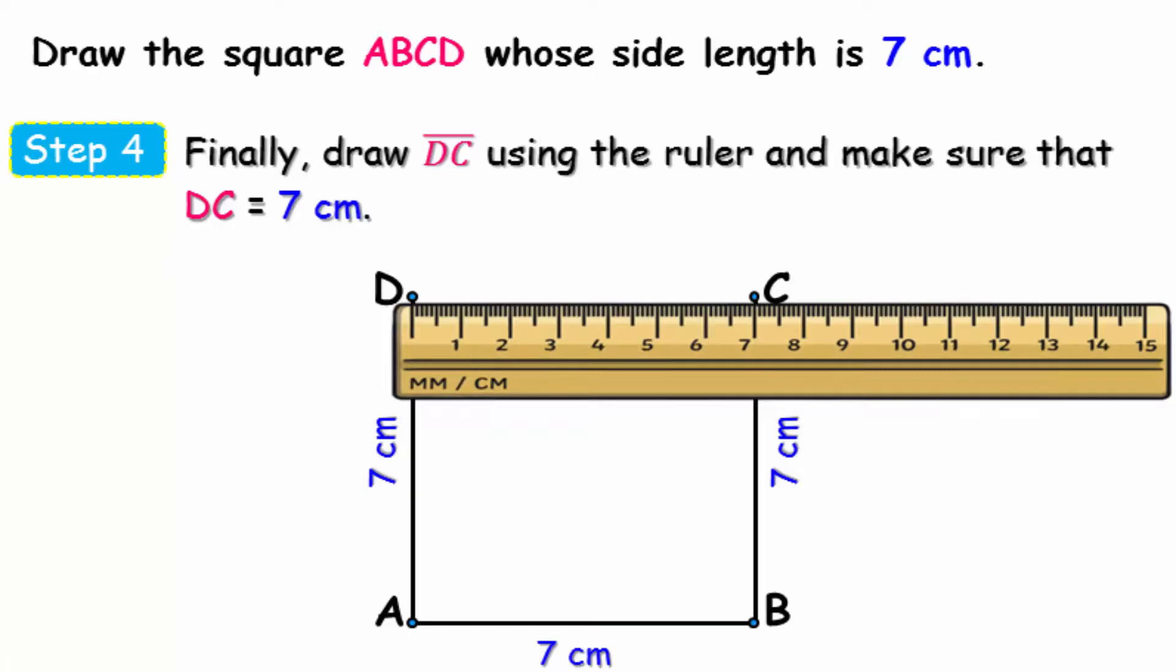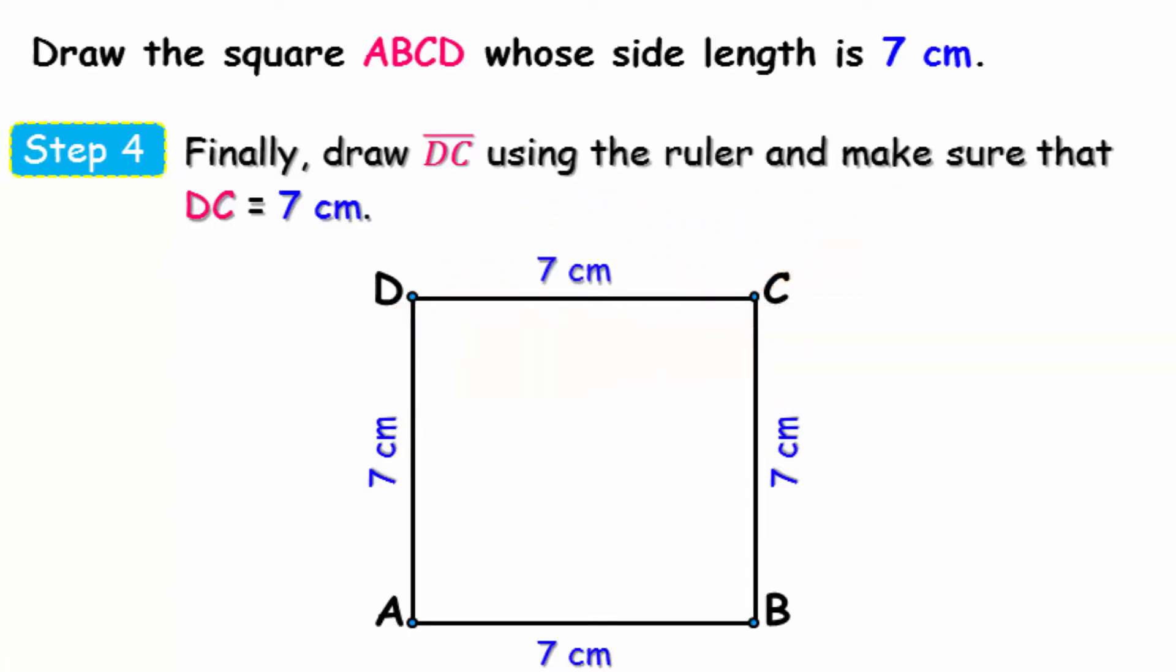the length of DC is 7 centimeters. So we get the final shape of the square ABCD and it has all sides equal in length.